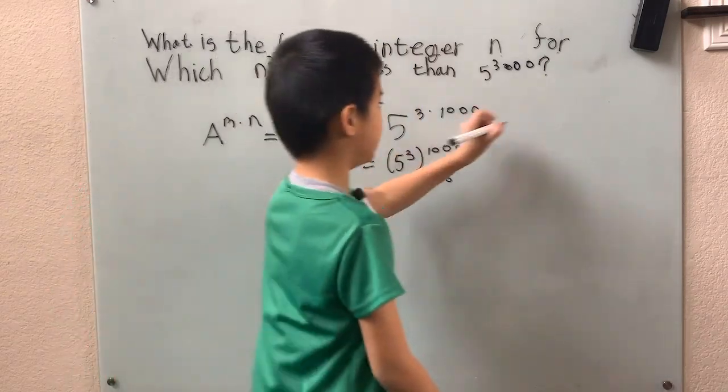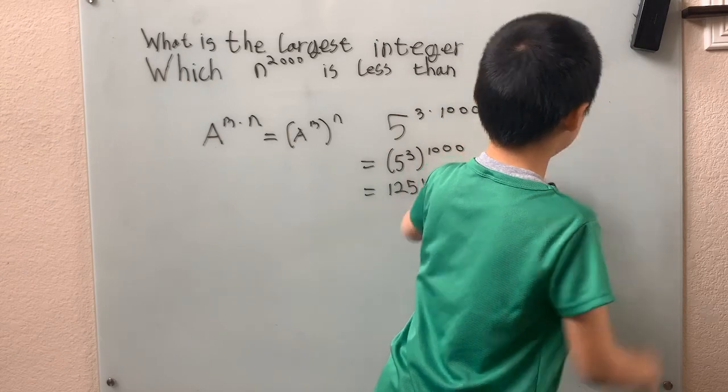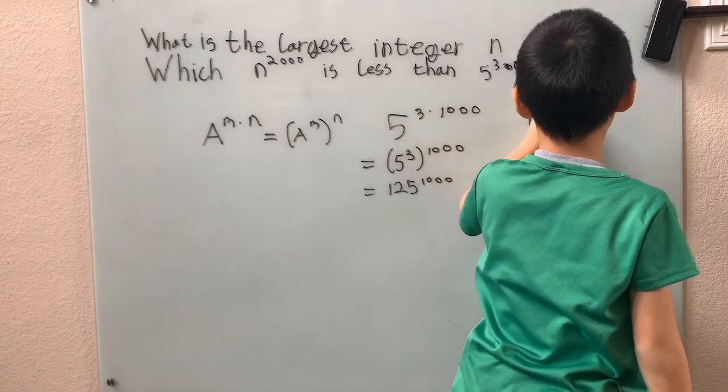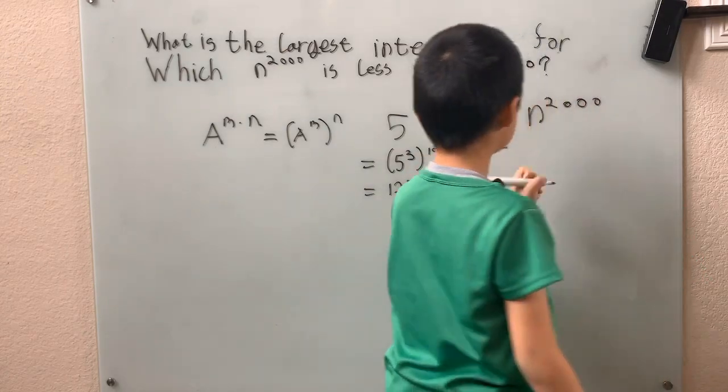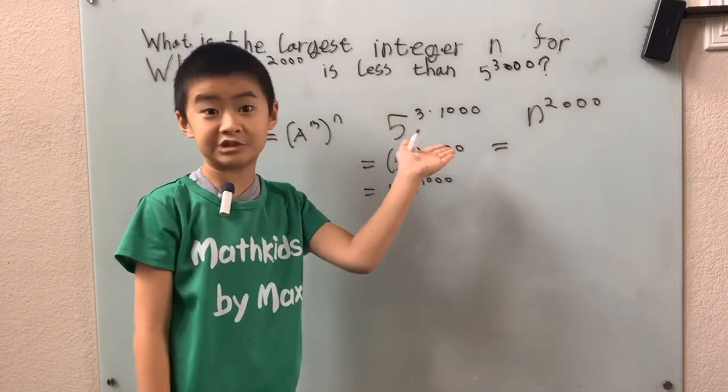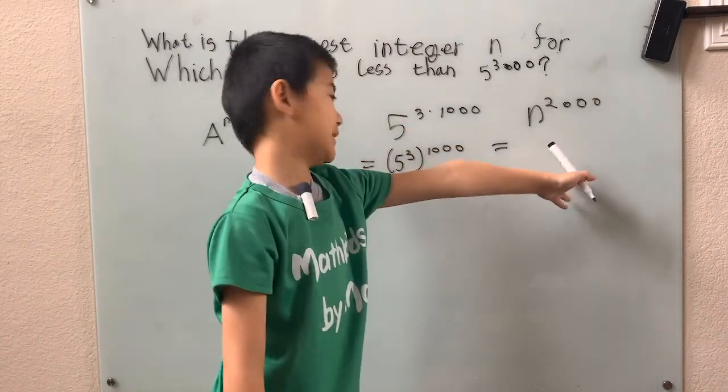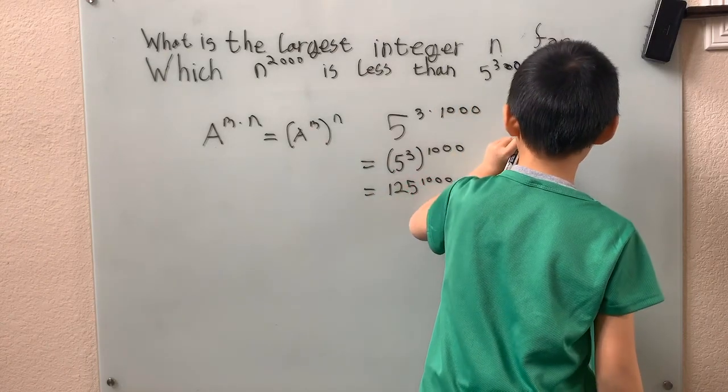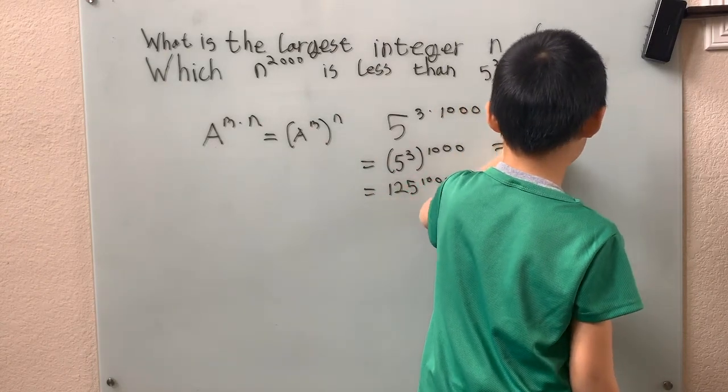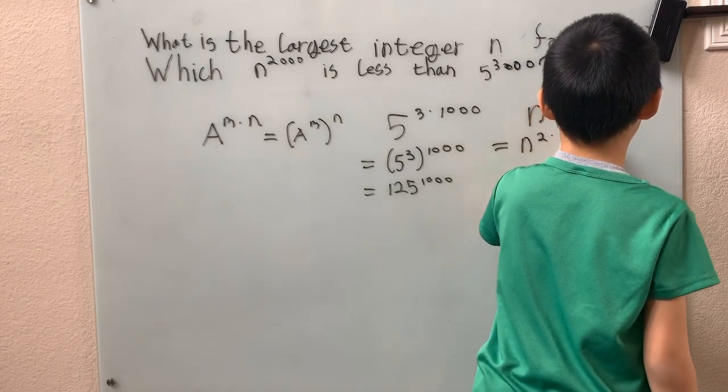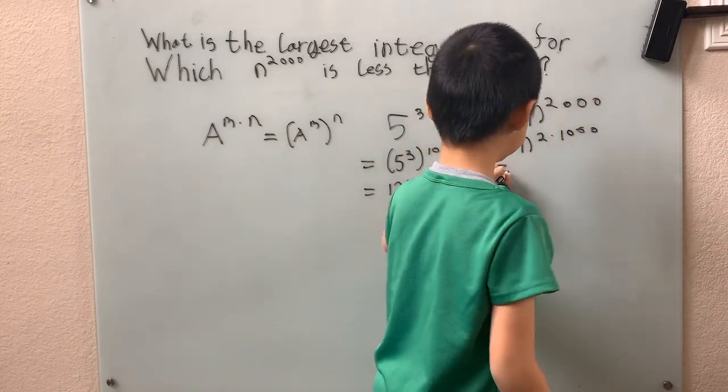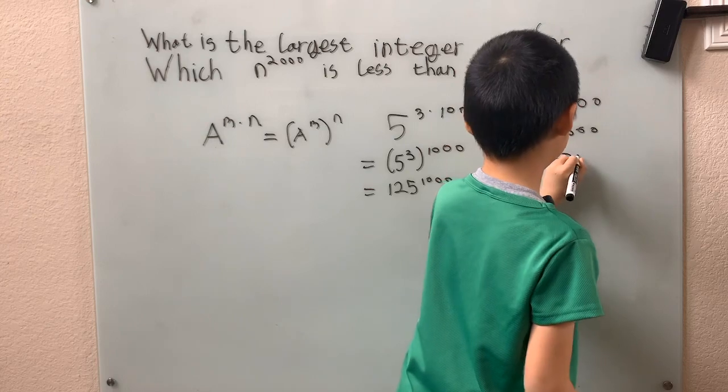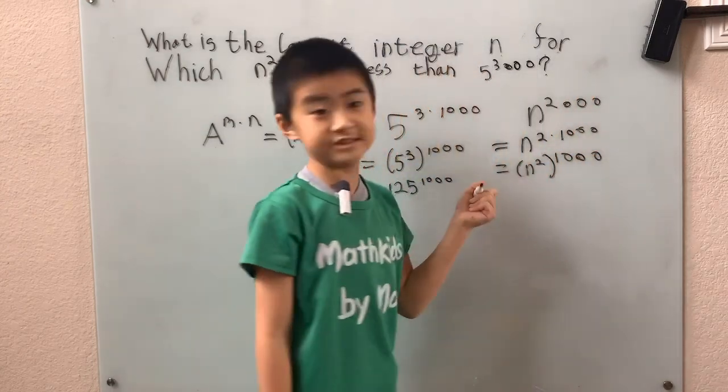And now we're going to take n over here. So we have n to the 2,000, right there, n to the 2,000. And again, we're going to, we want to take out the same factor. Because we don't want it like the exponent here is 500 but the exponent here is 1,000, that would be even messier. So take out the same factor of 1,000. Even though I know we can take out 500, but we just said that was wrong. So we just use our same power of a power rule, n squared to the 1,000 power. And that's the simplest way we can write it.